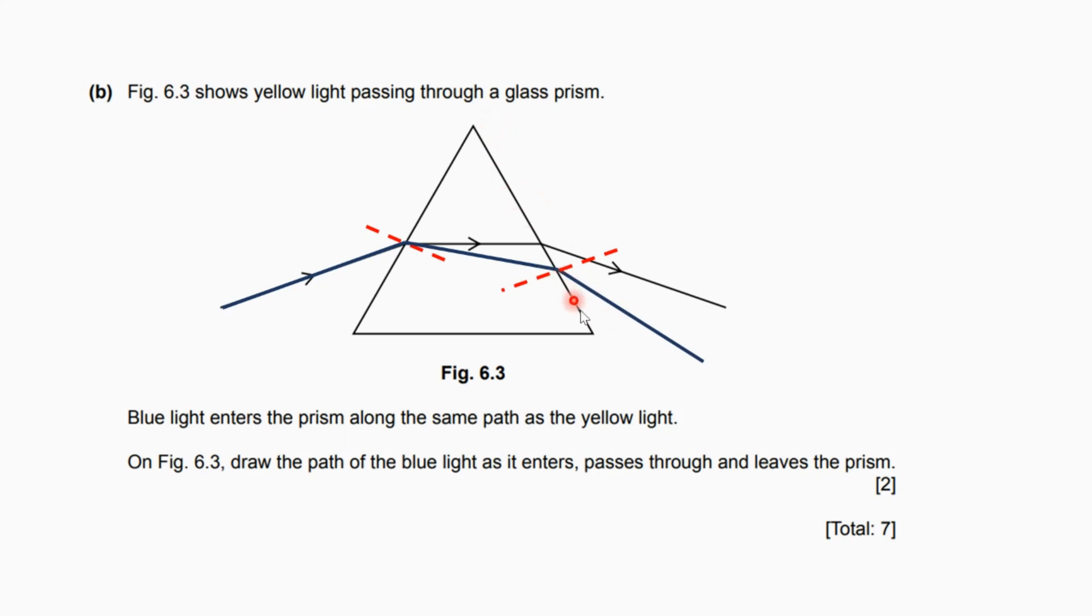Once you leave the second side of the glass prism, do not forget to draw the rays or the arrows on the rays. So this one for the incident light ray, and the second one which is the refracted light ray, and finally the emergent light ray. So you get two marks for showing the normal and how much refraction happened. The blue light must be below the yellow and showing the emergent light ray. So you finally get two marks.